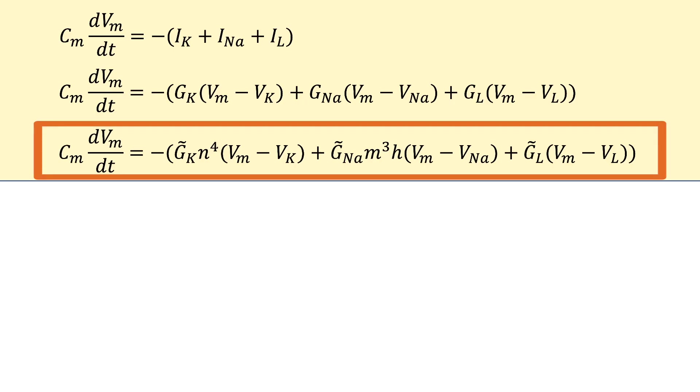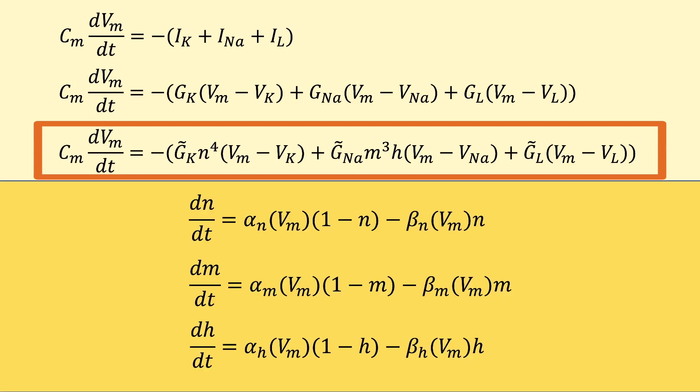But how is M, H, and N described mathematically? They are described via their change with time using the transition rates from the gating concept, which are dependent on VM.